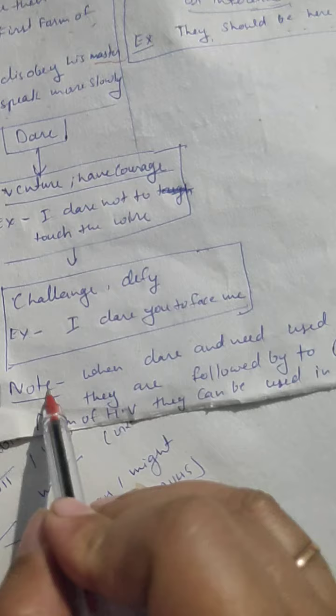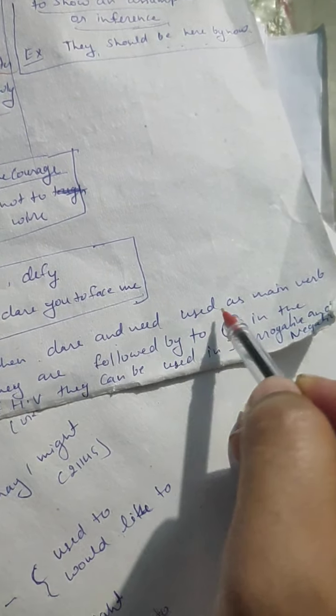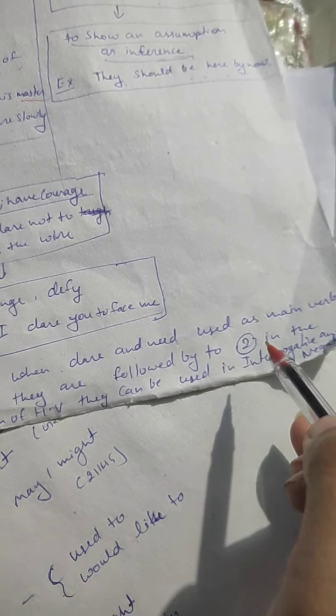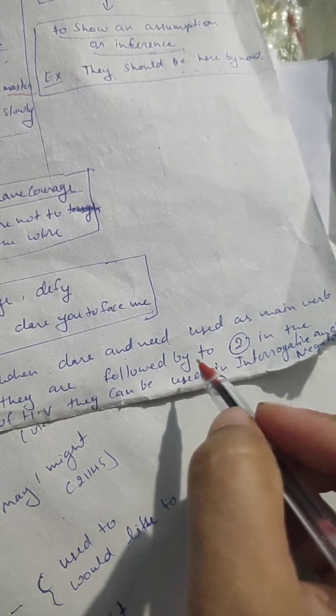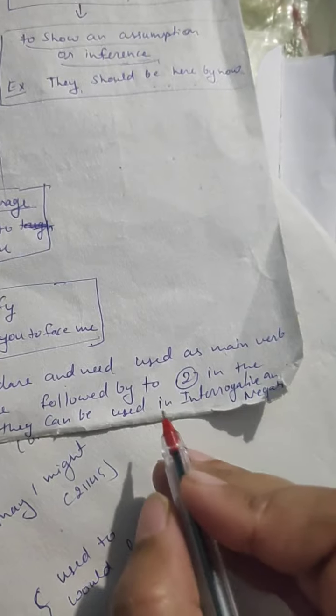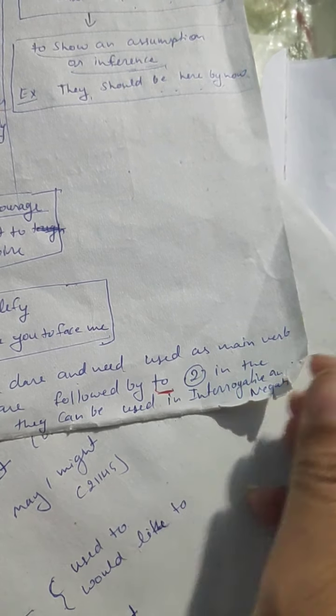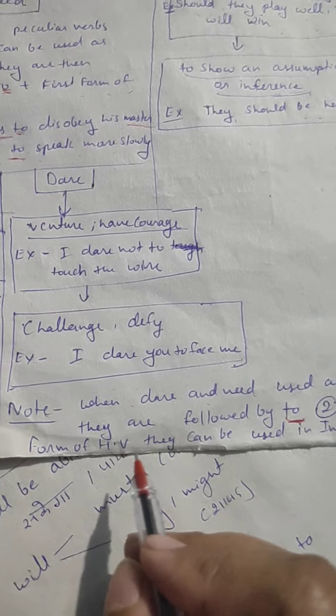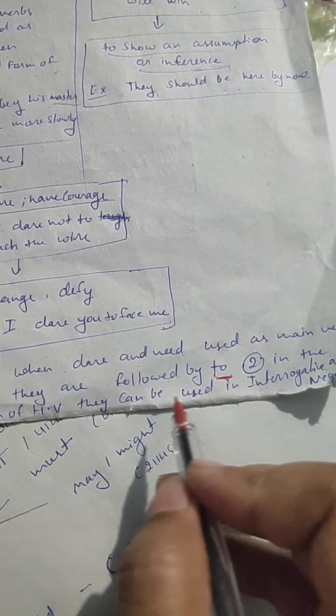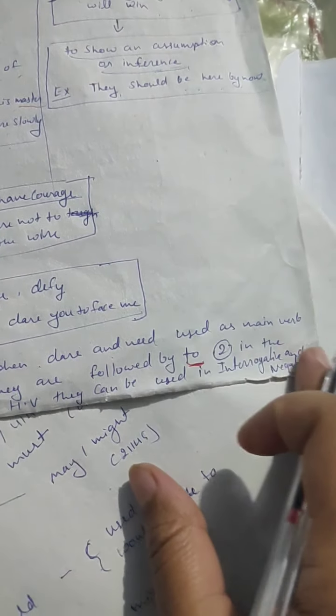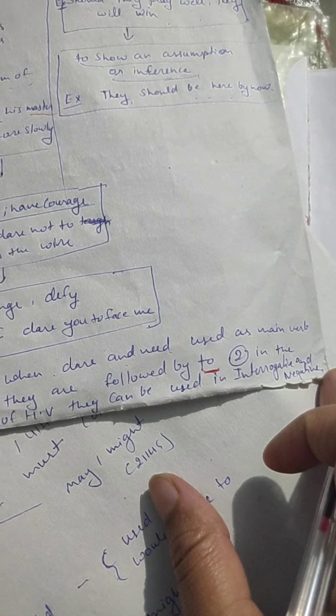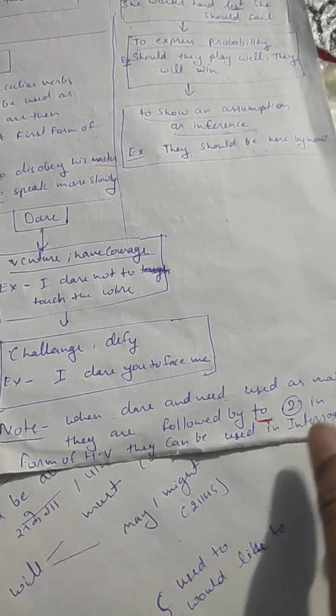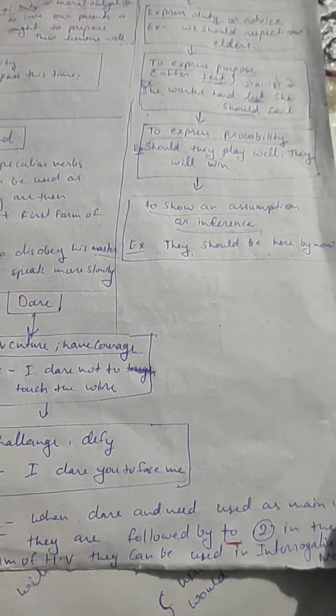As a note, when dare and need are used as main verbs, they are followed by 'to'. And in the form of helping verbs, they can be used in interrogative and negative sentences. As helping verbs, they can only be used in interrogative and negative sentences.